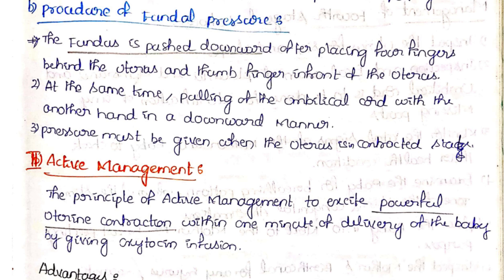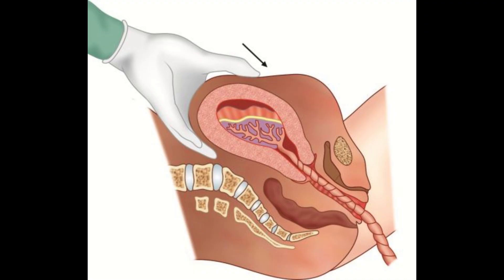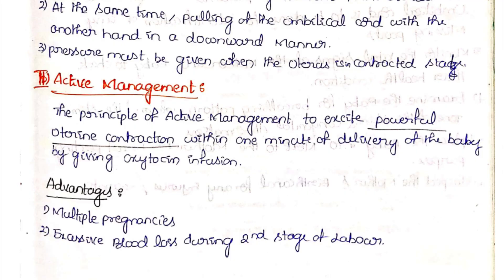For fundal pressure, four fingers are placed behind the uterus and the thumb in front of the uterus. At the same time, the umbilical cord is pulled downward with the other hand. Pressure must only be applied when the uterus is contracted. This is expectant management with controlled cord traction and fundal pressure.